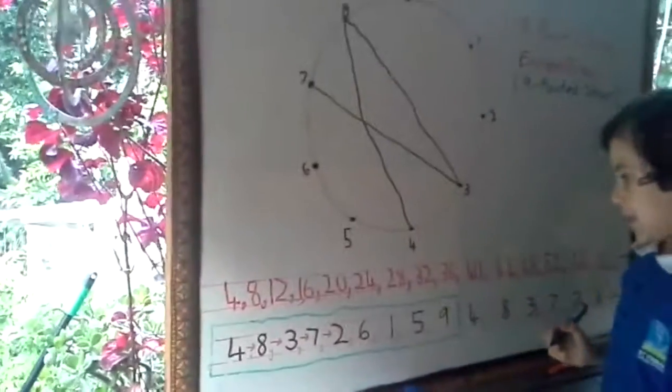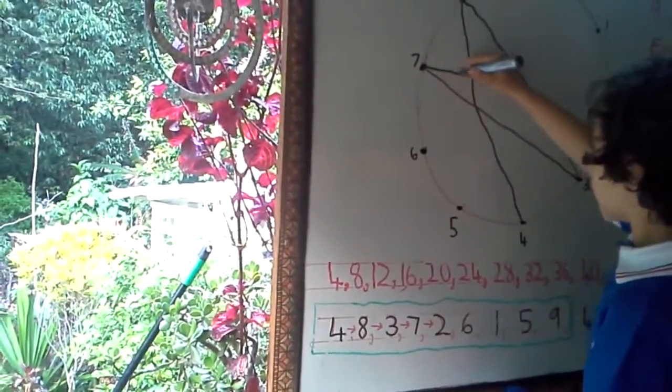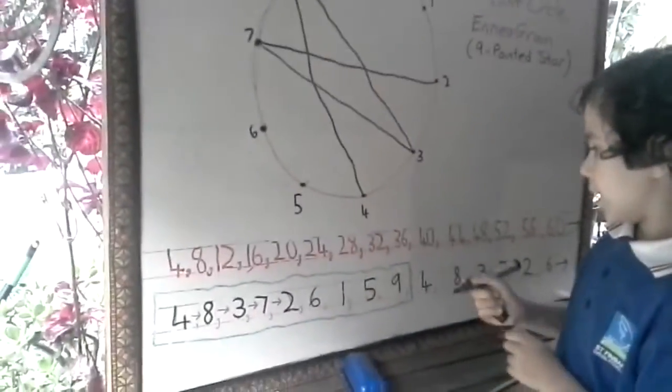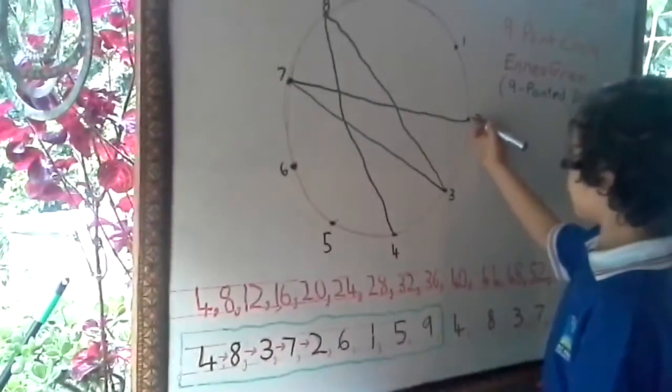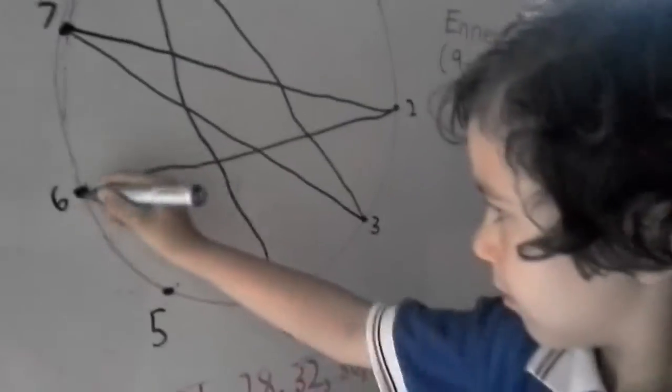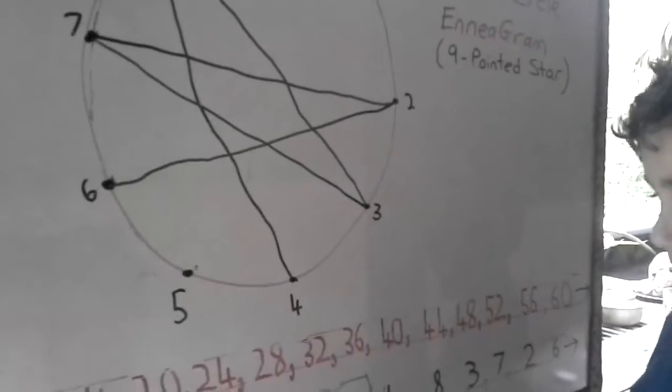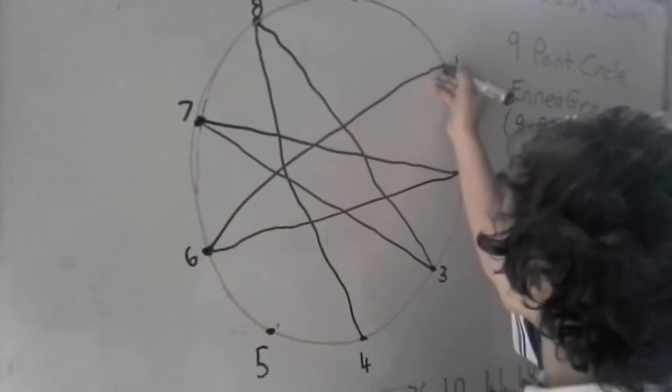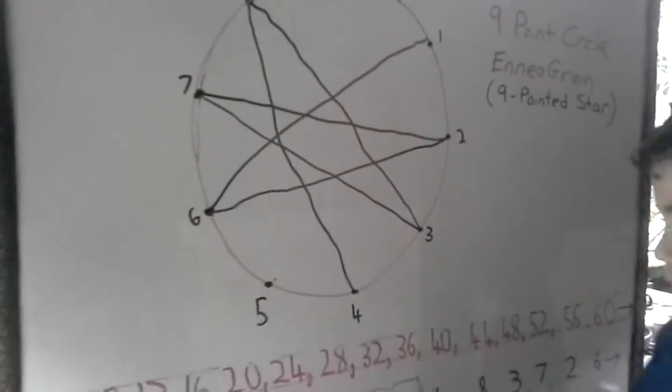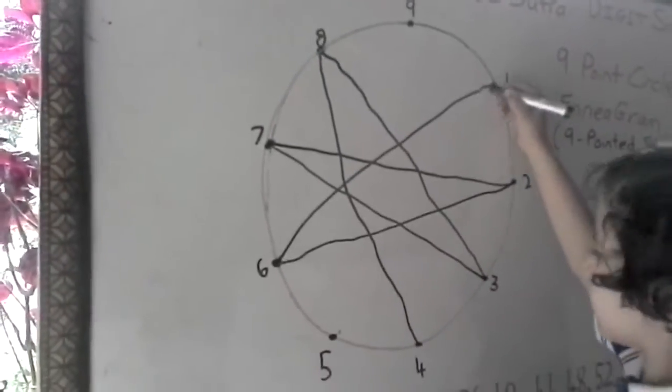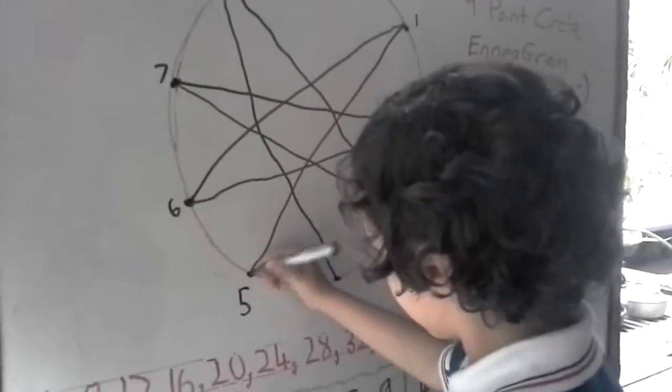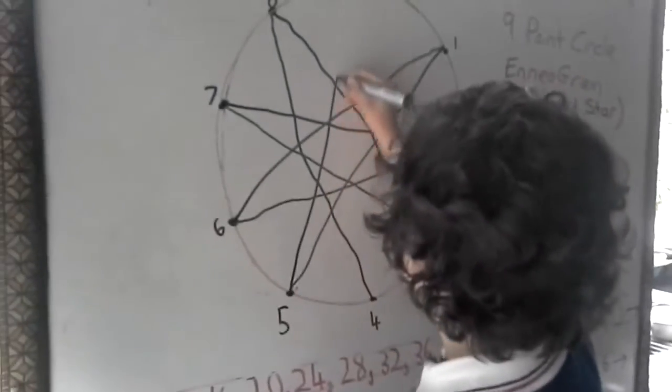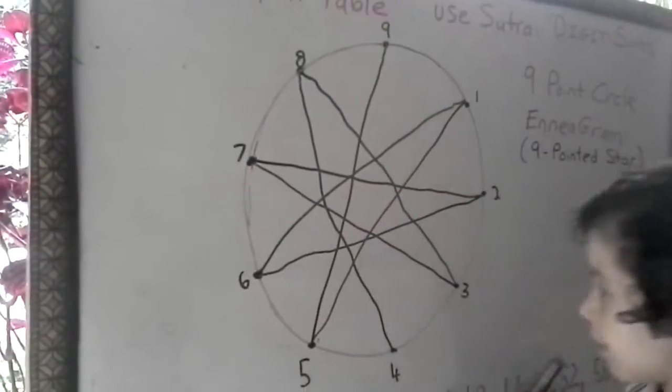Then from 7 to 2. That's a nice straight line. That was good. Then we go from 2 to 6. Then we go from 6 to 1. Then we go from 1 to 5. Then we go from 5 to 9.